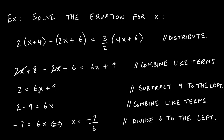Now we apply inverse operations to isolate x. The 9 is being added on the right-hand side, so we subtract it to the left: 2 minus 9 gives us negative 7, and 6x remains. The operation between 6 and x is multiplication, so to undo it we divide, yielding a potential solution of negative 7 over 6.